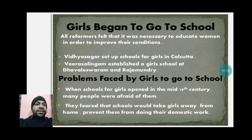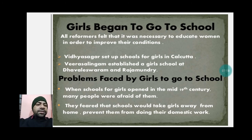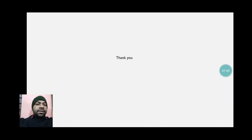Another problem girls faced was that they were not allowed to go to school. Vidyasagar set up schools for girls in Calcutta, and Veeresalingam established a girls' school at Dhavaleswaram and Rajamundry. When schools for girls opened in the mid-19th century, many people were afraid. They feared that schools would take girls away from home and prevent them from doing domestic work.